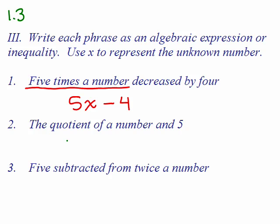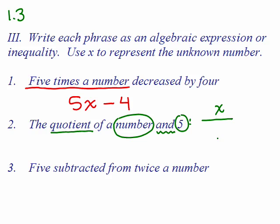When you talk about a quotient in algebra, you're talking about writing something as a fraction. The quotient of this and that — the "and" separates the two parts. What is in front of the "and" goes on top, and what's after the word "and" goes on the bottom. So the number is x, and the other part is 5, giving us the quotient x over 5.